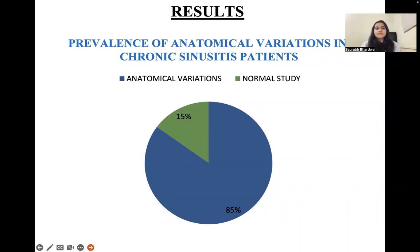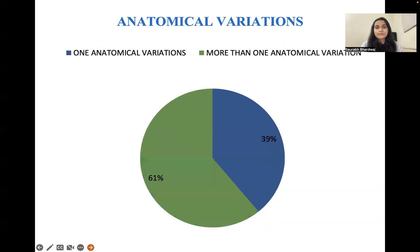For the prevalence of anatomical variations in chronic sinusitis patients, approximately 85% had anatomical variations noted and only 15% of patients had normal anatomy with chronic sinusitis. Only 39% of patients had one anatomical variation, while 61 patients had more than one anatomical variation with chronic sinusitis.